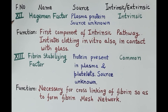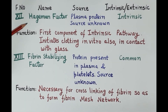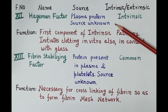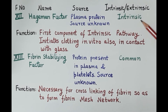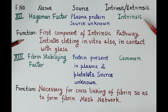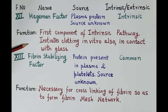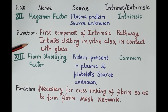Clotting factor 12 is called the Hageman factor. It is a plasma protein whose source is unknown, and it is essential for the intrinsic pathway. Clotting factor 12 is the first component of the intrinsic pathway and is activated by activated platelets. Clotting factor 12 also initiates clotting in vitro upon contact with glass.